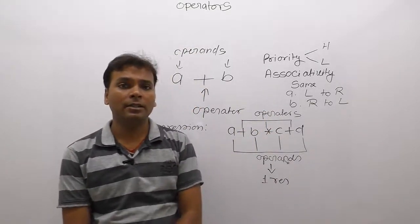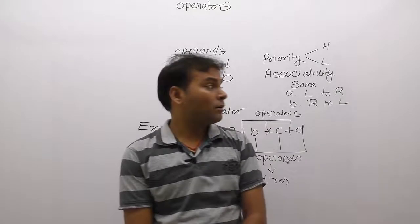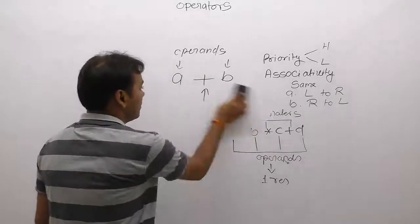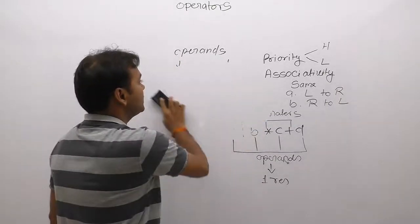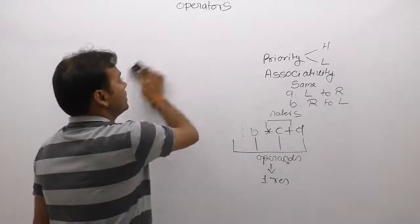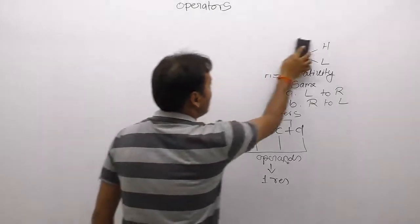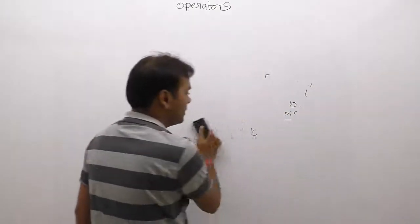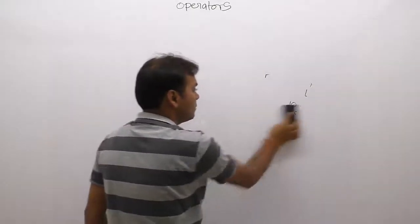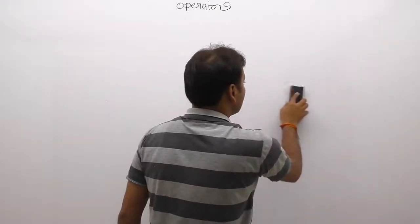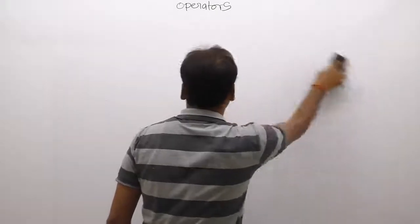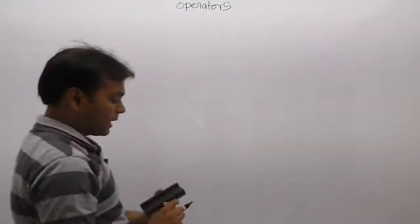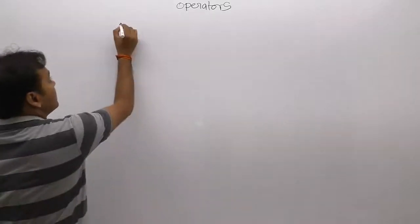If priorities are different, you never need to follow associativity rules. Next, we will highlight the list of operators based on their priorities. First the priority table will be covered, after that we will discuss all operators one by one.